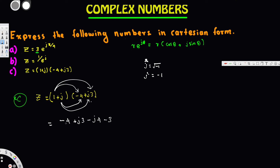We can simplify further by combining real and imaginary parts. The real parts: -4 minus 3 equals -7. The imaginary parts: +3 minus 4 equals -1, so we get -j. Therefore z equals -7 - j. That's our final answer for the last part. That's how we do the conversion into Cartesian form. I hope this helps — thanks for watching!